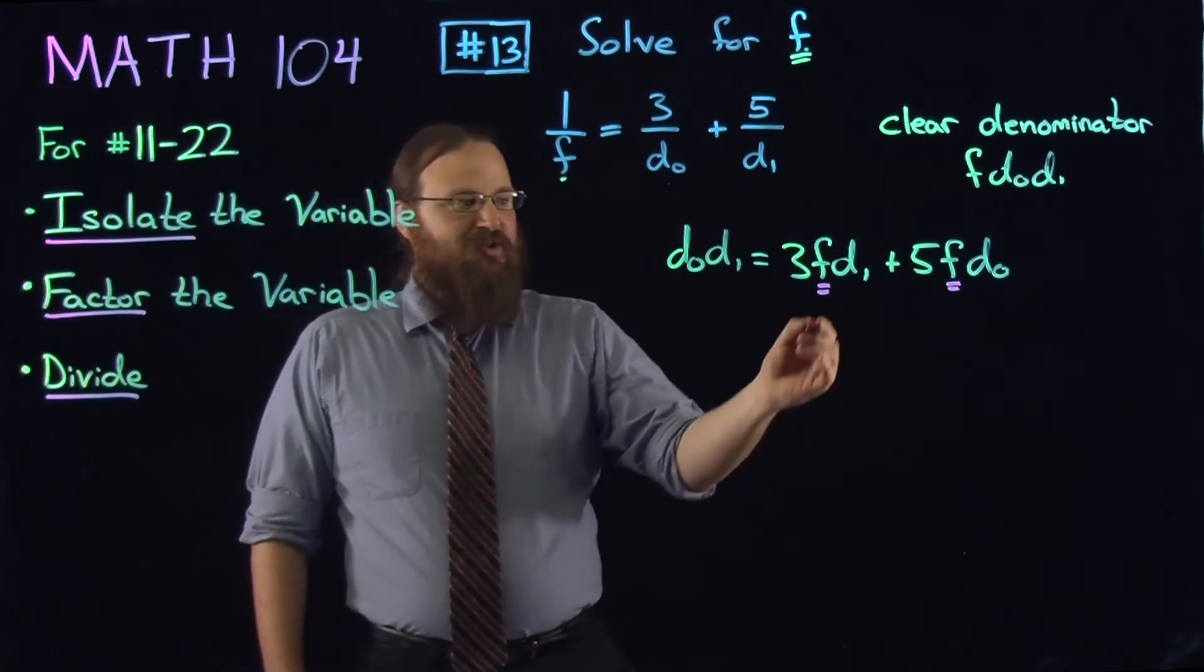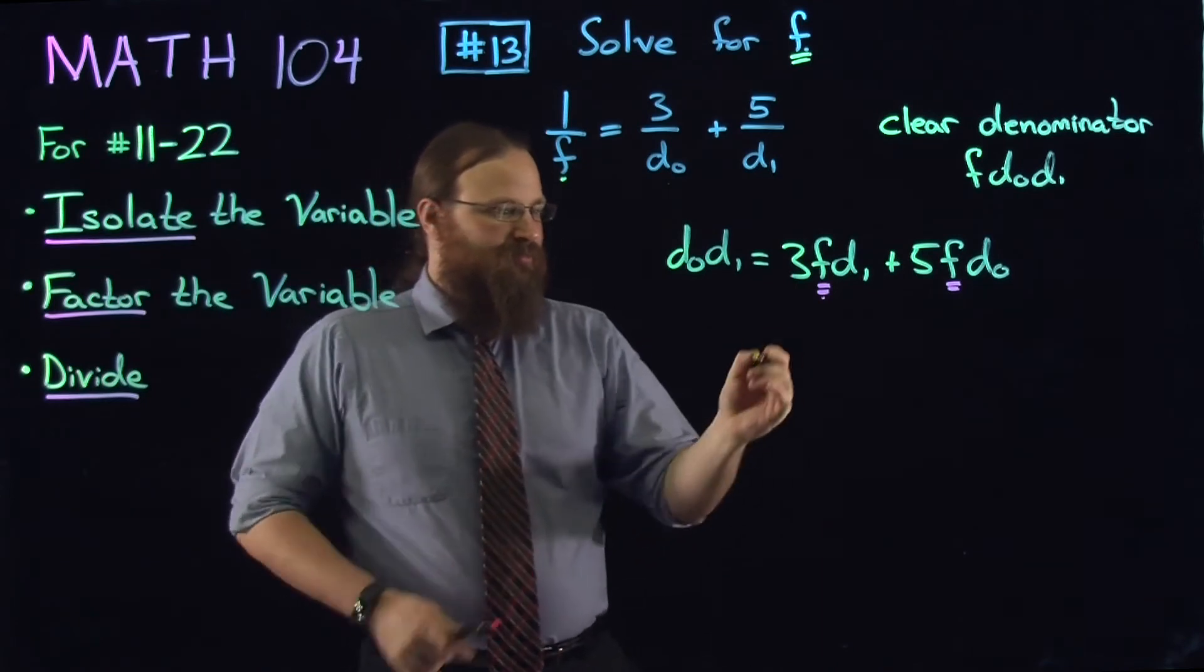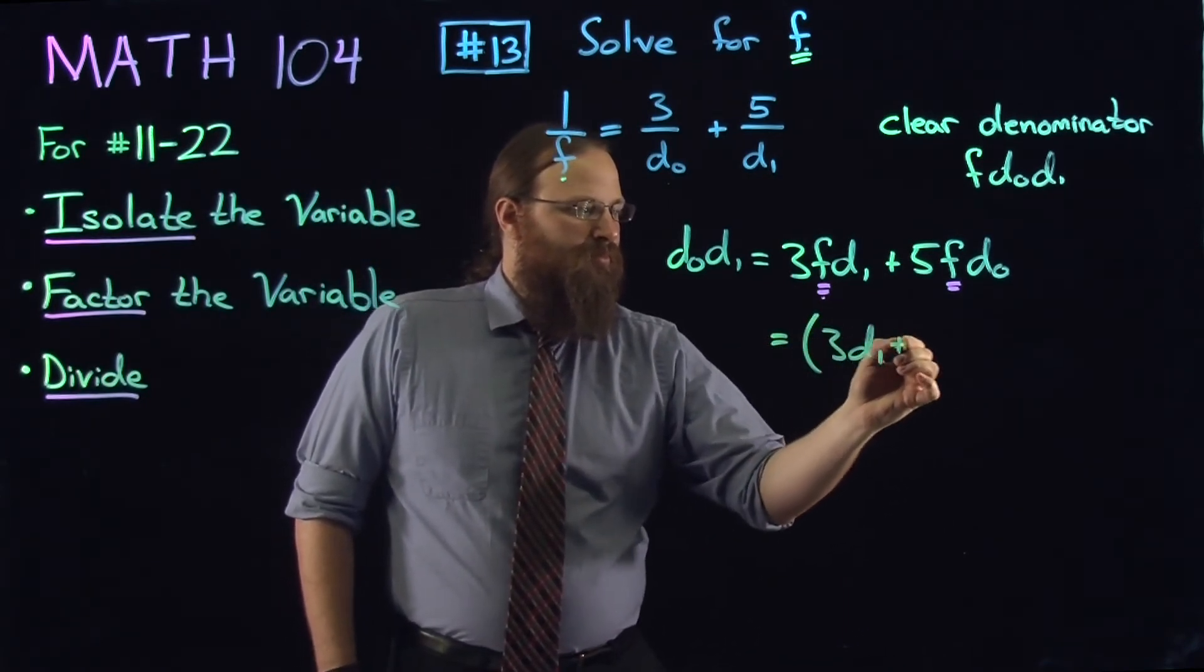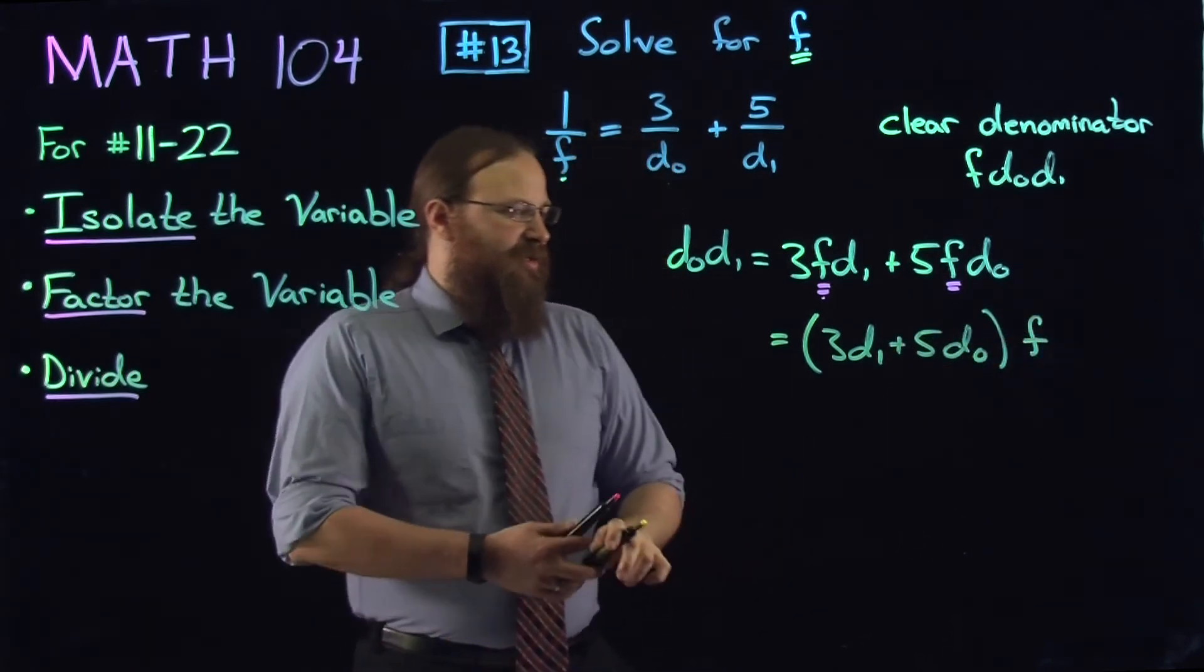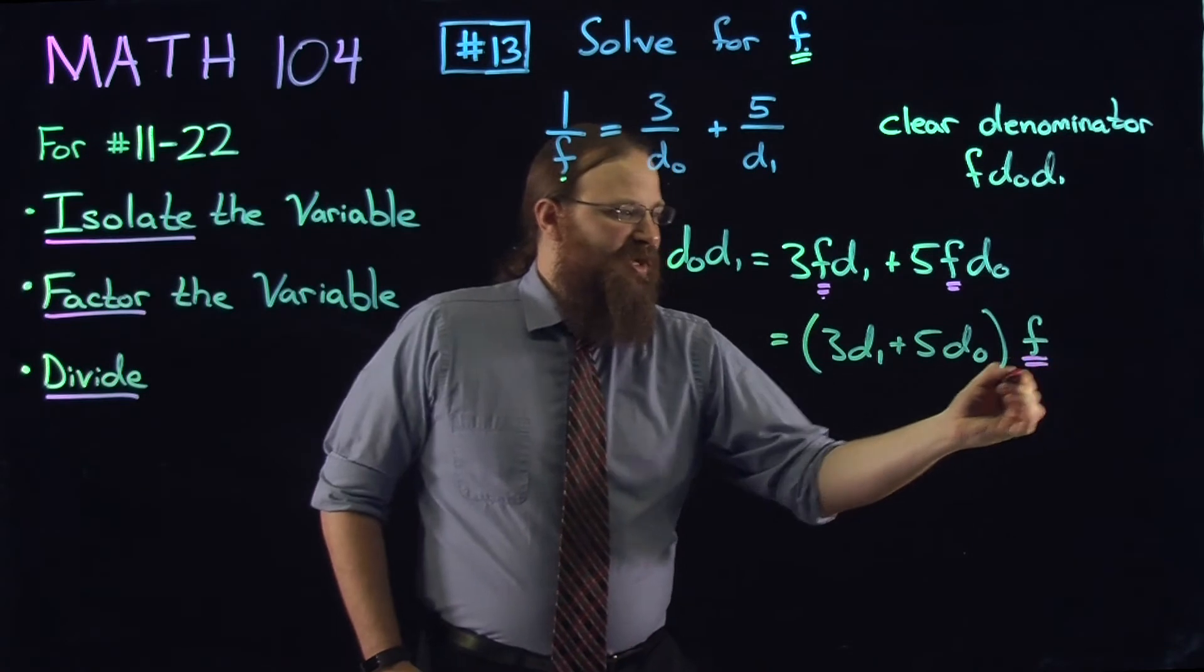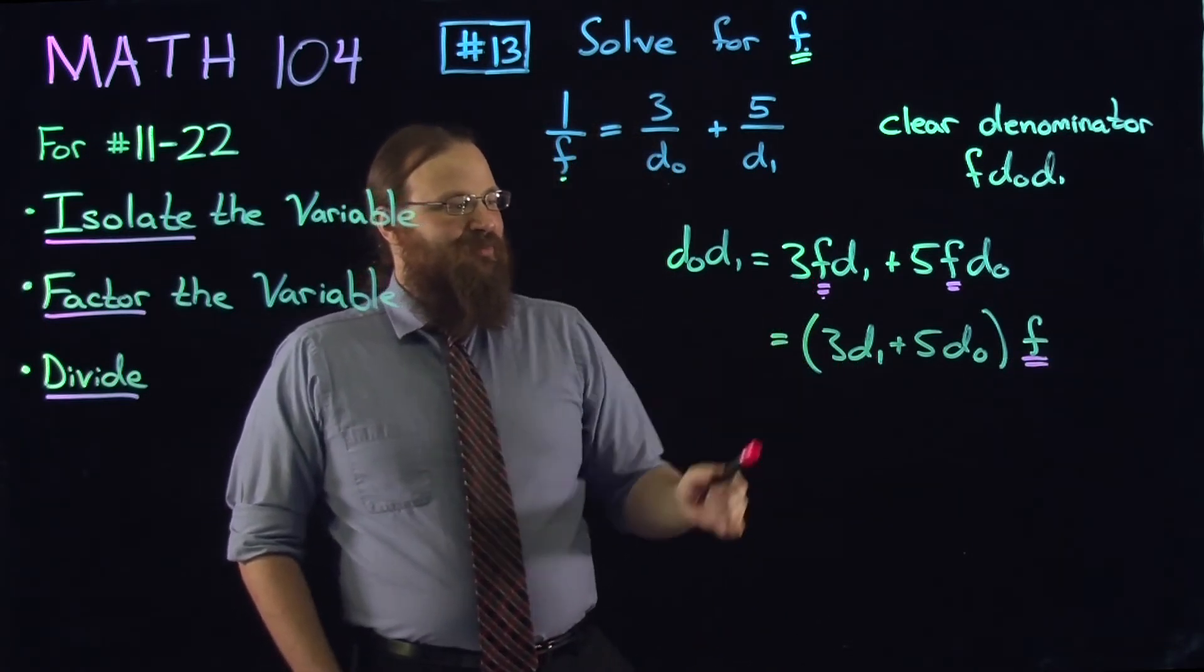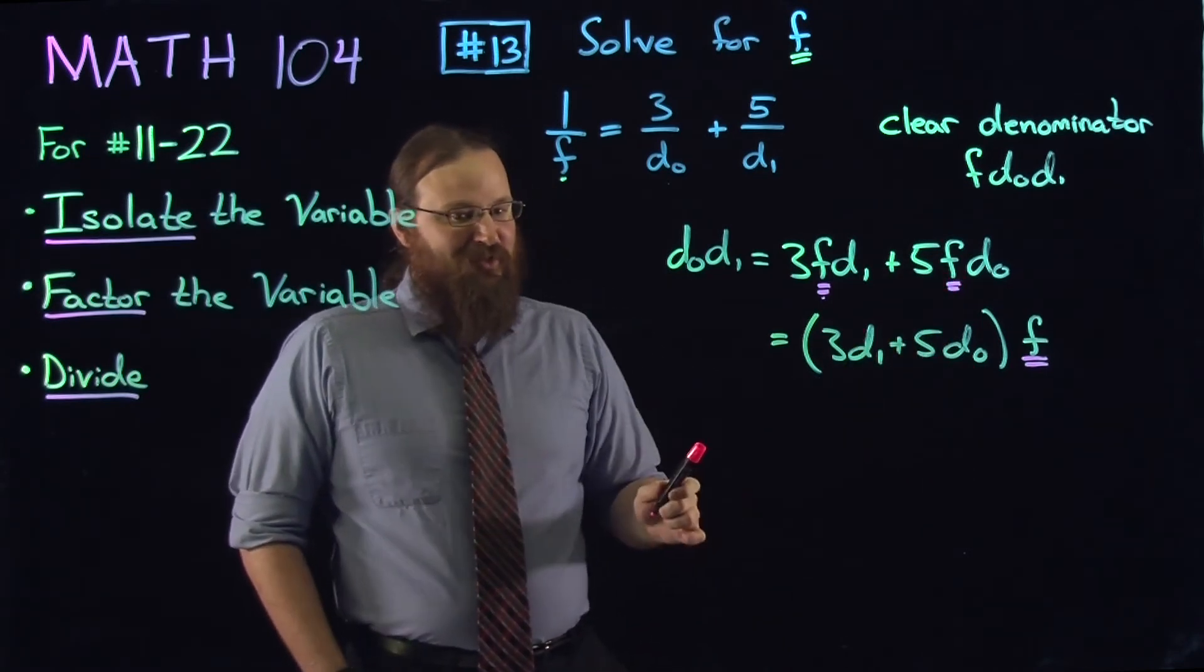Now we're going to move into factoring. What we're going to do is we're going to factor away the f from the right-hand side. So we took the f out of every term. Taking the f out of this term leaves us with 3 times d1. Taking the f out of the second term leaves us with 5 times d0.